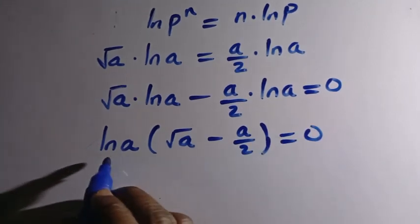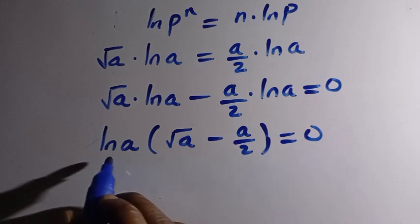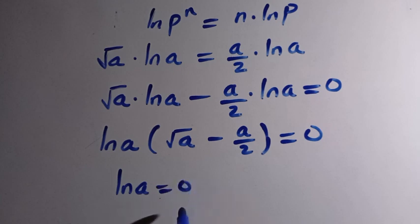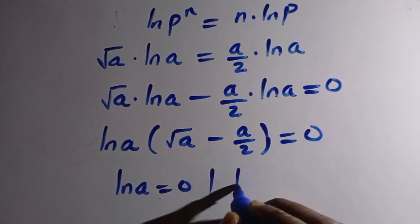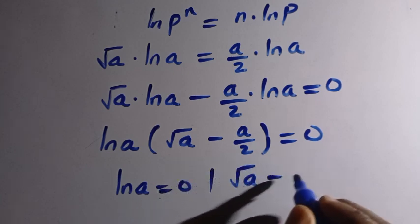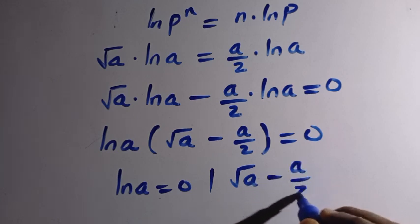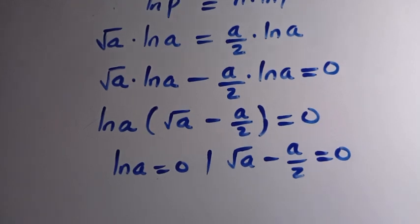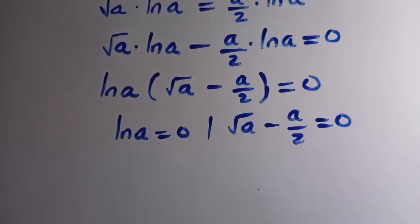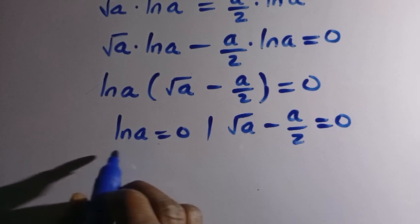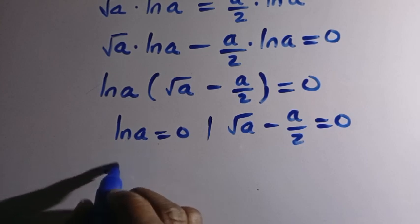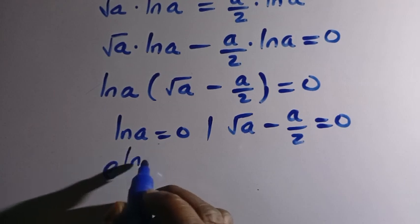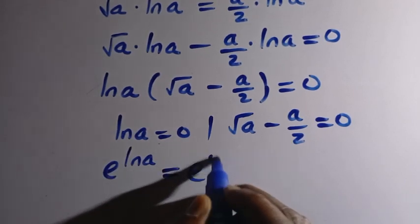For this product to equal zero, either ln a equals 0, or square root of a minus a divided by 2 equals 0. For the first case, ln a equals 0, we introduce the exponential on both sides: e raised to the power of ln a equals e raised to the power of 0.